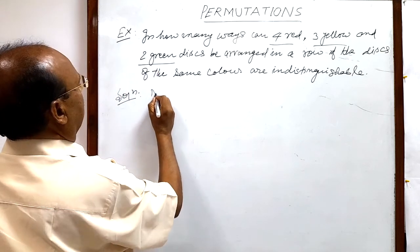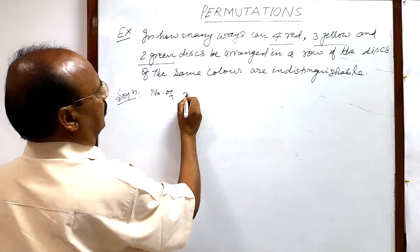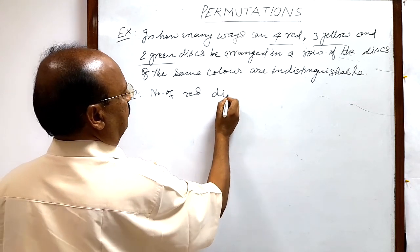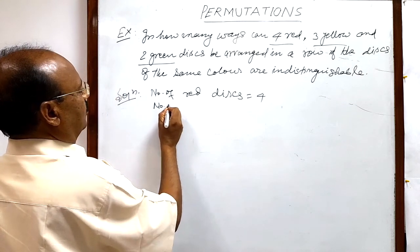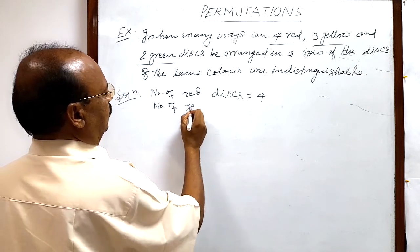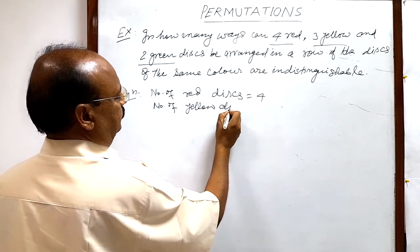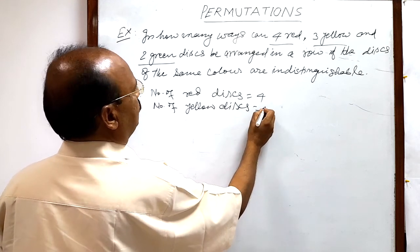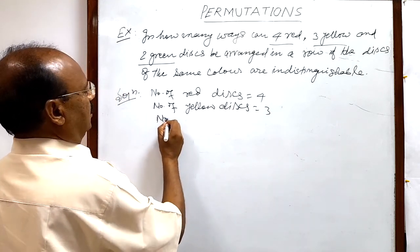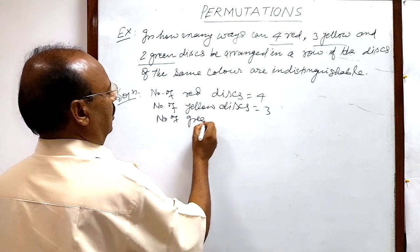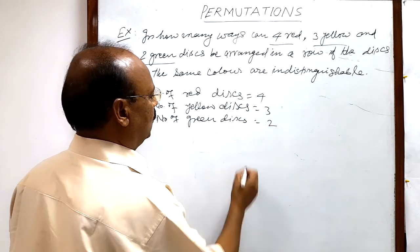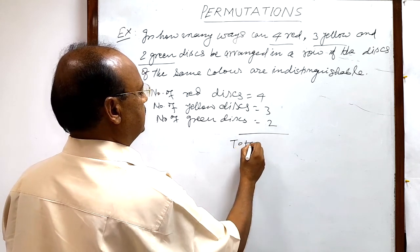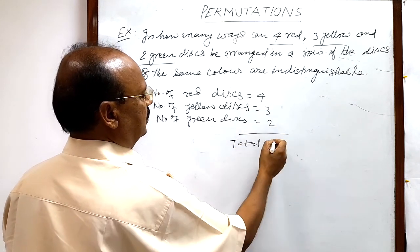So here, number of red disks is equal to 4, number of yellow disks is equal to 3, and number of green disks is equal to 2. So total number of disks is equal to 9.